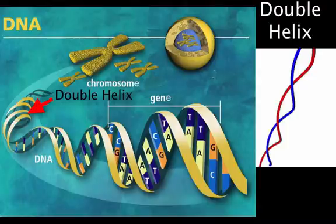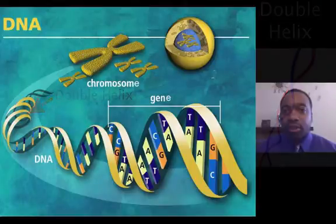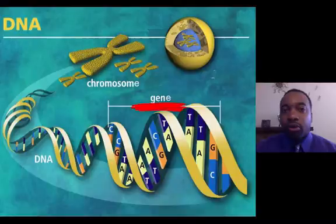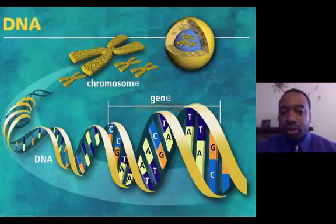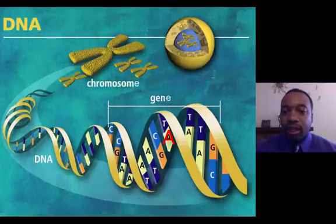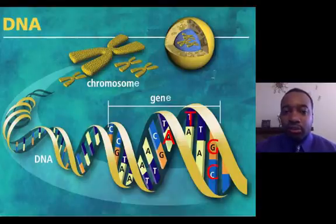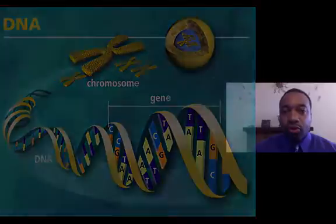And of course, we know that different segments are going to be the different genes. And then we zoom in even closer, we see these nitrogen bases — these A's, T's, G's, and C's. Let's explore this a little further.